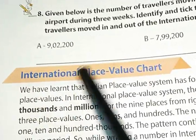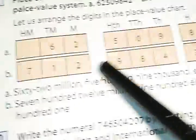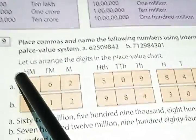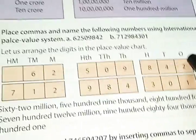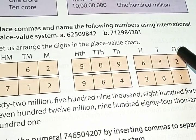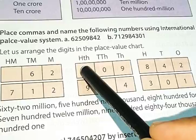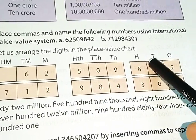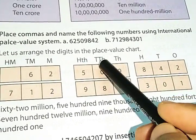Next, international place value chart. So, look at the book. That is the international place value system. First one, as usual, like Indian place value system. Ones, tens, hundreds, thousands, ten thousands.